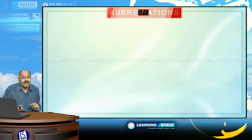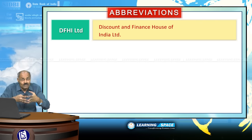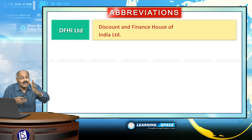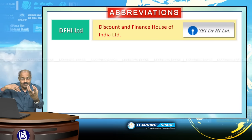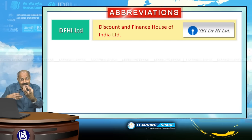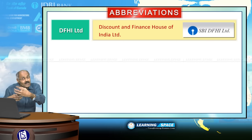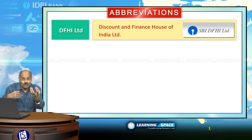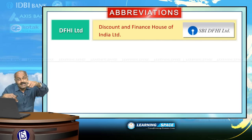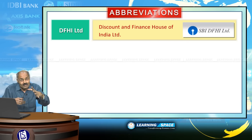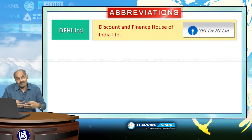DFHI Limited is the Discount and Finance House of India Limited, also known as a primary dealer. A primary dealer transacts in government securities — both primary and secondary. Treasury bills and dated securities transactions take place through primary dealers. For the banking system as a whole, SBI DFHI acts as the primary dealer for banks.